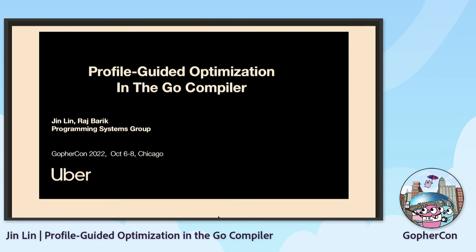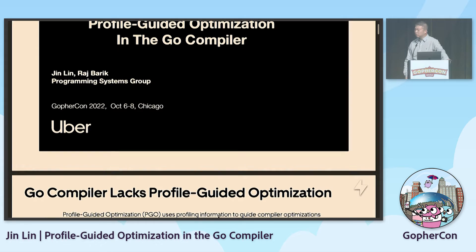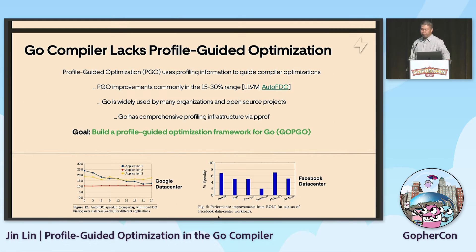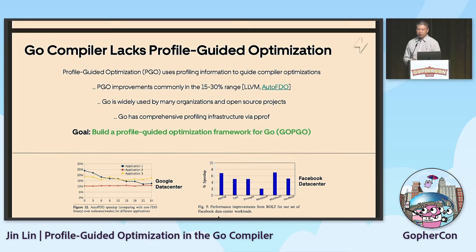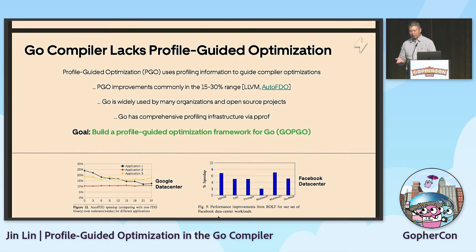This is a teamwork with others. Profile-guided optimization uses profile information to guide compiler optimization, and the improvement for PGO is usually about 15 to 30 percent. You can see those figures for Google data center and the Facebook data center.